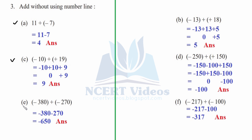Part e: minus 380 plus minus 270. Here the signs are the same. We have learned that when signs are the same, we just add the numbers and put the sign. So 380 plus 270: zero plus zero is zero, seven plus eight gives fifteen — one carry — three plus three gives six. Therefore minus 650 is your answer for part e.